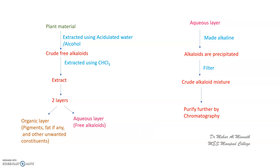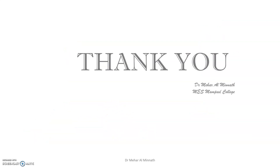These are the three methods of extraction of alkaloids from plant materials — just a brief explanation. Refer to books for more in-depth information. Hope it is clear to you. Thank you.